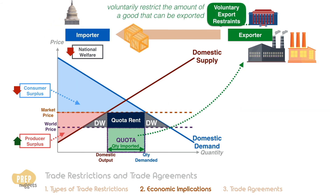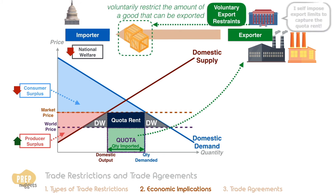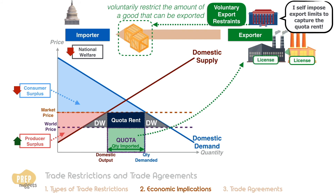Voluntary export restraints are very similar to a quota, except that this limit is self-imposed by the exporting country's government. In a way, this can be seen as the exporting country's attempt to capture the quota rent rather than letting the importing country have it. In this case, the licenses are issued by the exporting country's government.